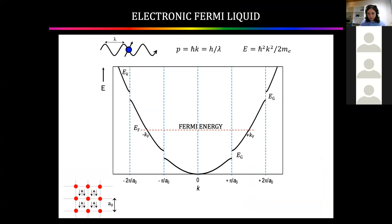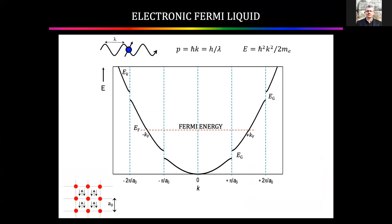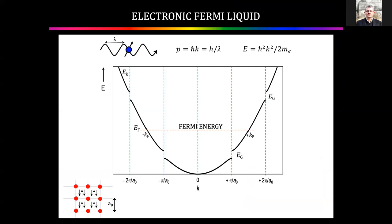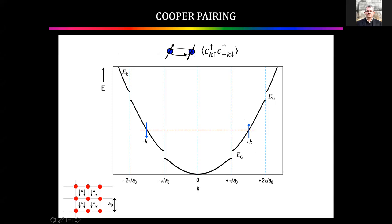Superconductors emerge from metals. In the simplest model — an electronic Fermi liquid — the energy-momentum relationship is p-squared over 2m. Electrons are in a crystal, so famous band gaps open, and if there's an odd number of free electrons per unit cell, all the states fill up to the Fermi energy. But this beautiful state of matter is completely unstable. Electrons of opposite momentum and opposite spin, for infinitely weak interactions at low enough temperature, will always bind together to make a two-electron state: the Cooper pair.